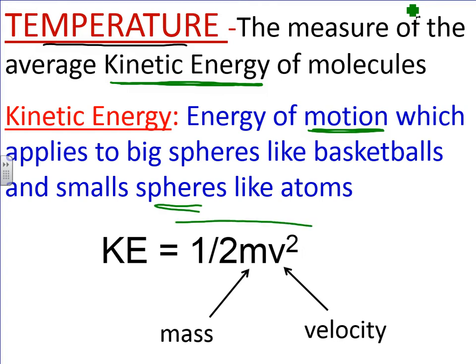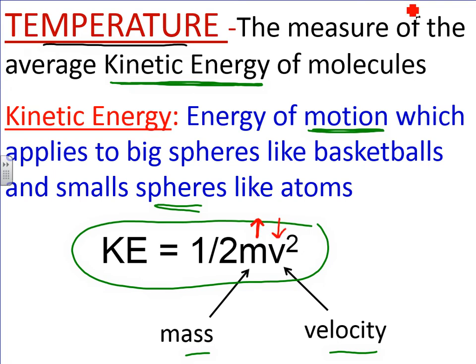The kinetic energy equation is KE = ½mv². You may have seen this equation before from physics. Here, m is mass and v is velocity. What this shows you is that as the mass increases — if you have a heavier particle, like a bowling ball — then the velocity of that bowling ball must decrease to keep the kinetic energy the same. In other words, these are inversely related. It's not perfectly inversely related because velocity is squared.